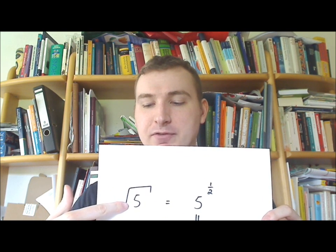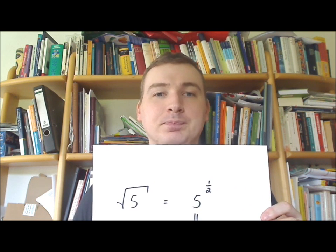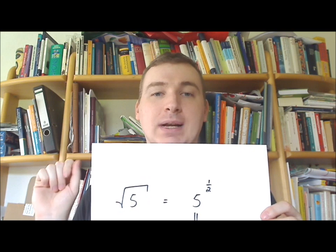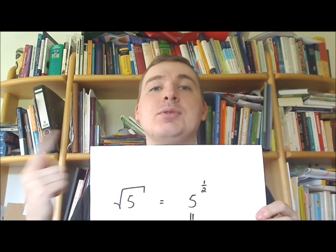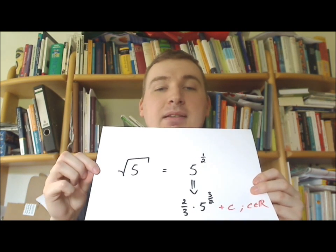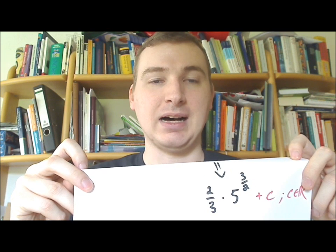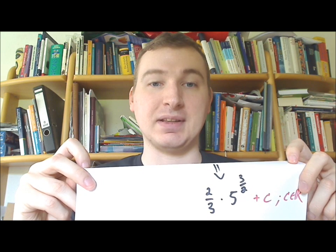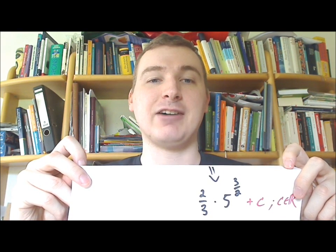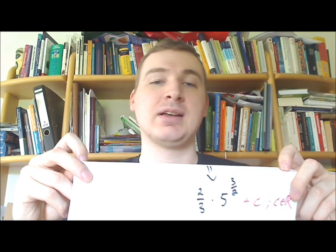This time we have the square root of 5, and the trick is to rewrite it as a power. So you can write square root of 5 as 5 to the power of a half. Now the trick is first increase — add 1 to the power — so just plus 1. And then divide by the new power. So we add 1: 1 is 2 halves, 2 halves plus 1 half is 3 halves. And then we divide 5 to the power of 3 halves by the new power, which is 3 halves. We can also write it as 2 divided by 3 times 5 to the power of 3 halves.